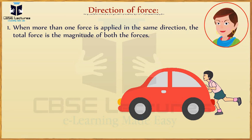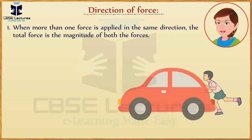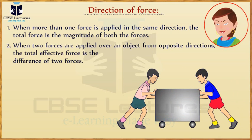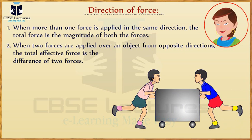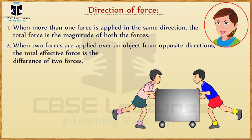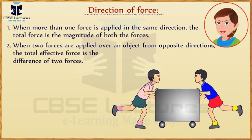The car is pushed easily because of the greater magnitude of force. When two forces are applied over an object from opposite directions, the total effective force is the difference of the two forces. For example, when two persons are pushing a box in opposite directions and the magnitude of both forces is equal, then the box will not move.